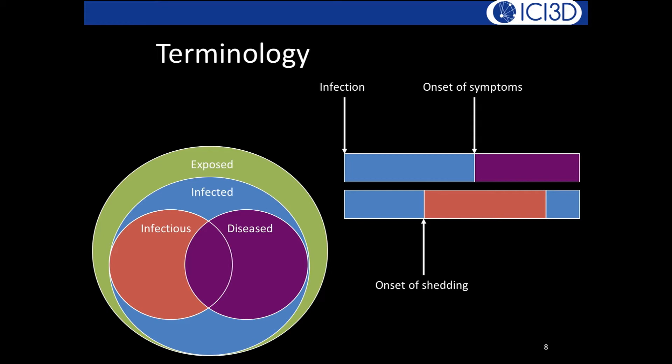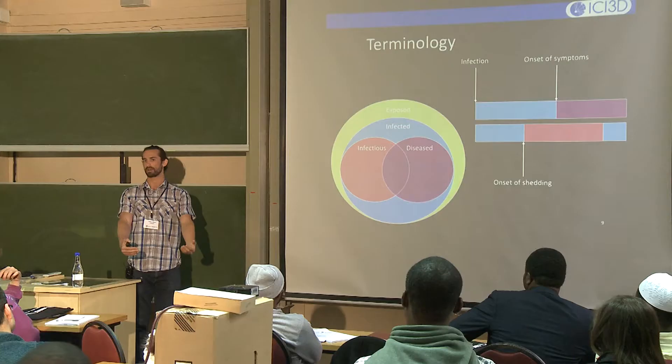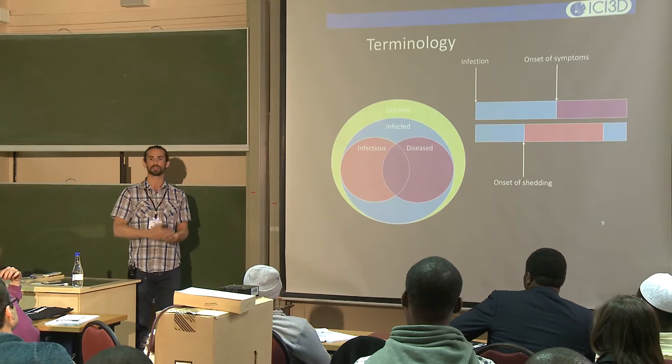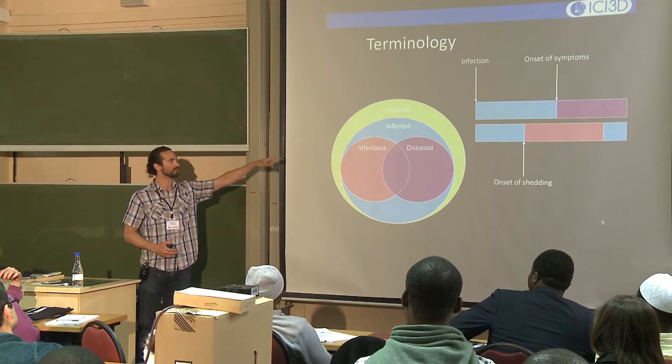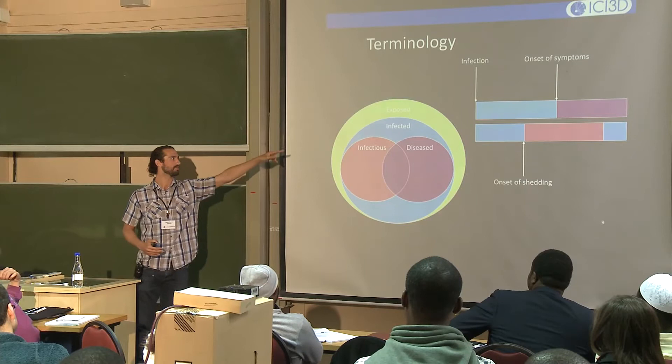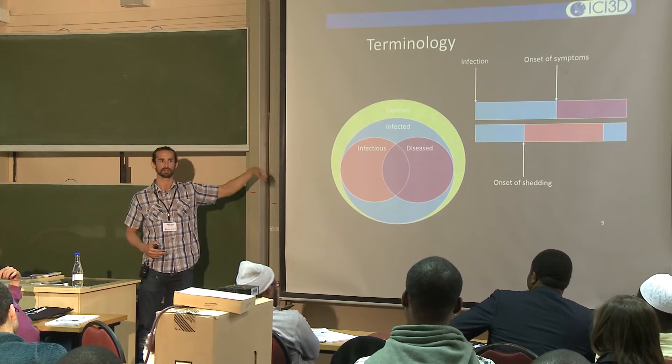Using Venn diagrams to clarify terminology: 'exposed' means someone has been coughed on, but exposure does not always lead to infection. If infected, you might not be infectious and might not be diseased — or you could be infected and infectious but not sick, or infected and sick but not infectious. All these combinations are possible and have different consequences for control.